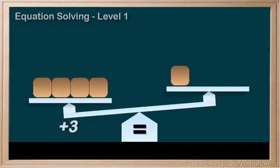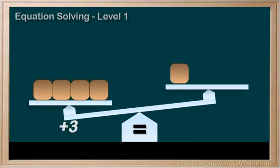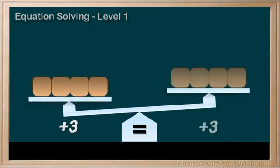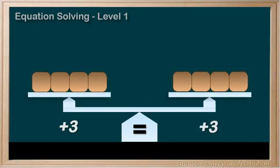If I add three to the left, what would I do to the right? To keep it balanced I'd have to add three to the right, and there it's back to equal.